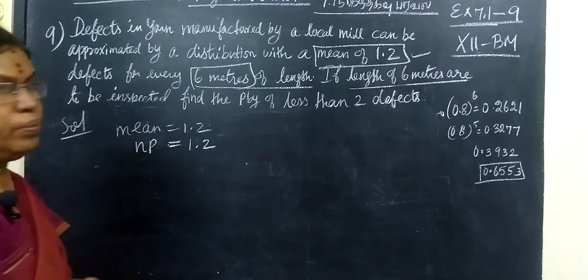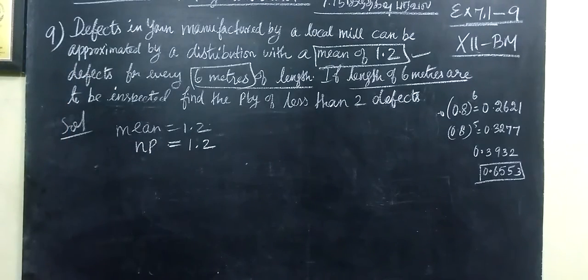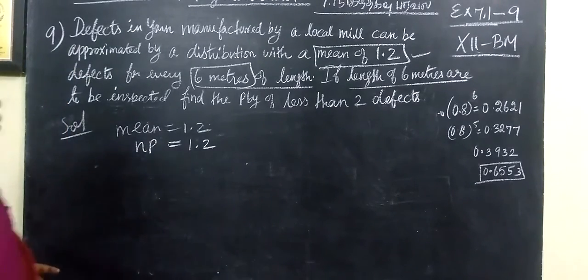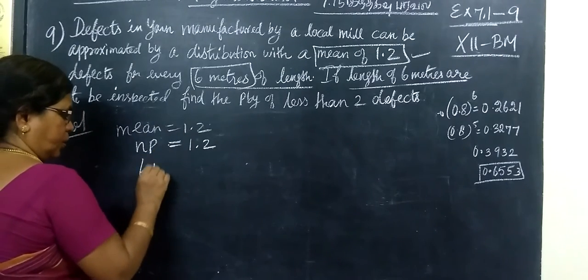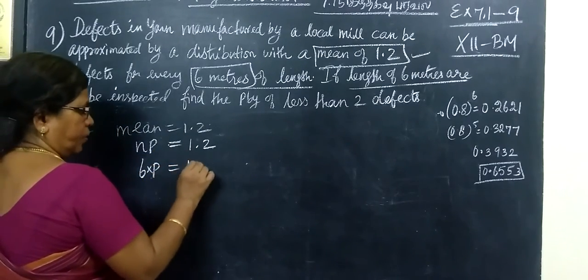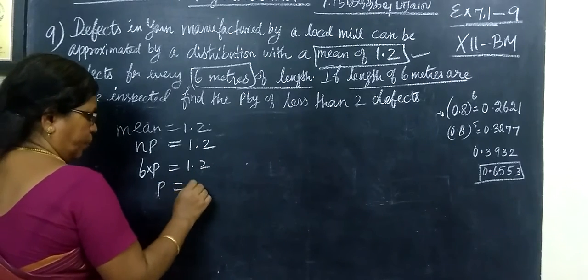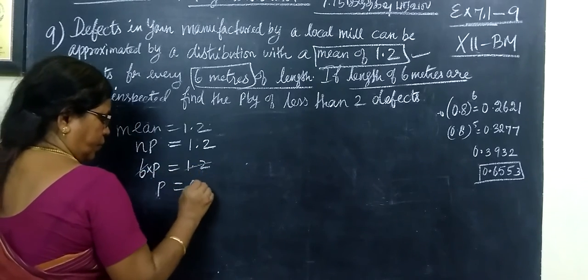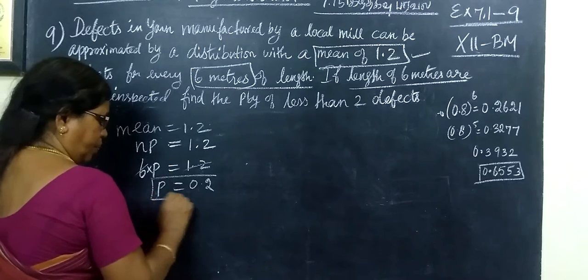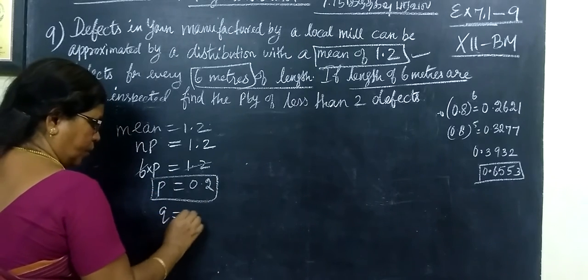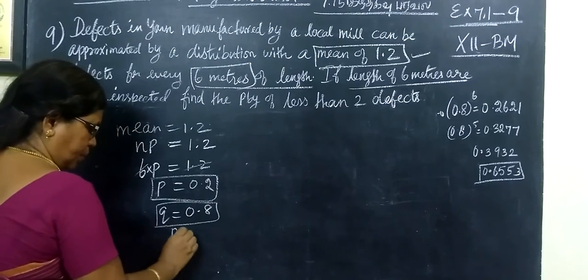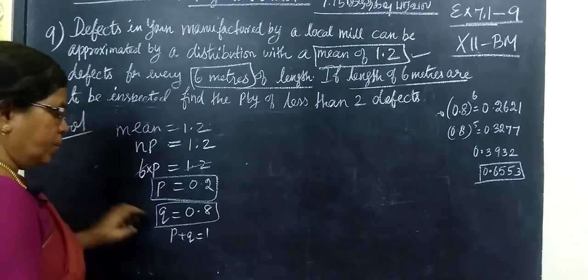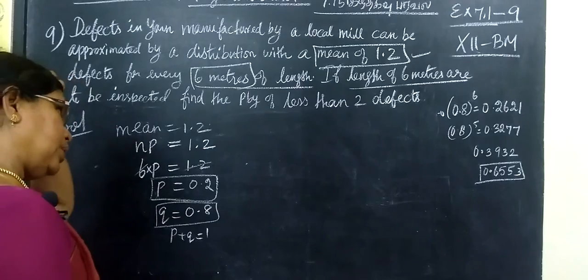For every 6 meters of length, the defect mean value is 1.2, so n value is 6. 6 into p equals 1.2, implies p equals 0.2. So p is 0.2, then q equals 0.8, because we know p plus q equals 1. Therefore q is 0.8.